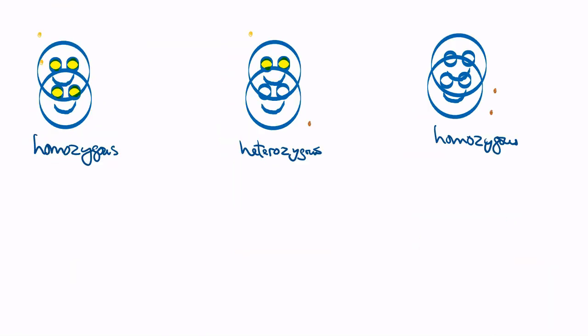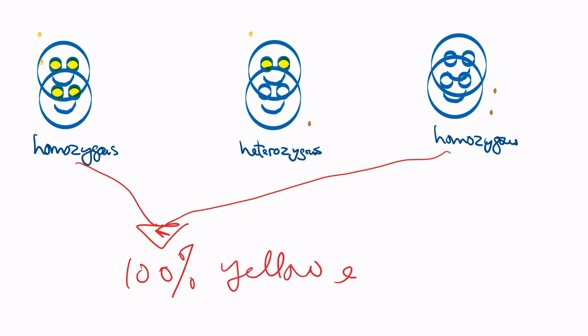We already saw when we did the F1 cross that we are crossing the homozygous yellow with a homozygous white, and we remember that through that cross we had 100% yellow-eyed.